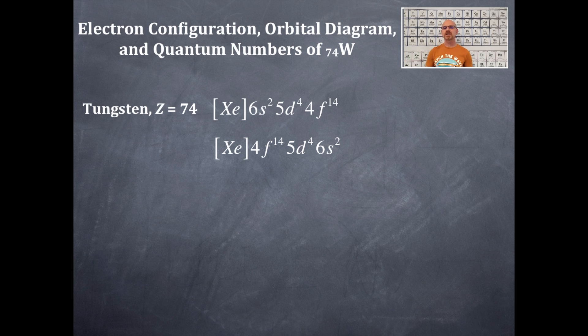You could have written it in this way: xenon, 4f14, 5d4, 6s2. The way of writing this is in the order of the energy levels. That is, the lowest, smallest n is interior, and the largest n is exterior.